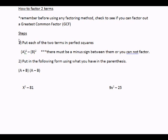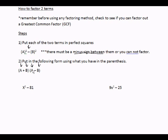The steps for factoring two terms are: step one, put each of the two terms in perfect square form — something to the second power minus something to the second power — and a very important part is that you must have a minus sign between them. Step two, put the following form using what you have in the parentheses: you'll have two big parentheses, A and A in the first part, B and B in the second part, and you're always going to have one plus and one minus.